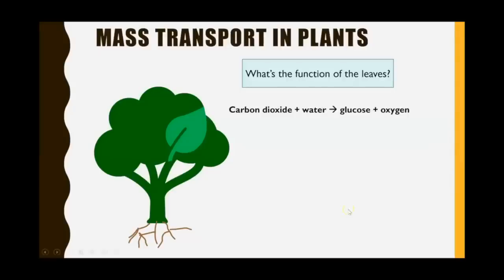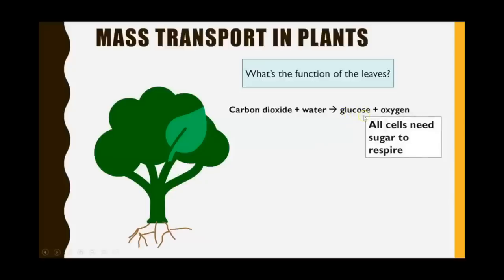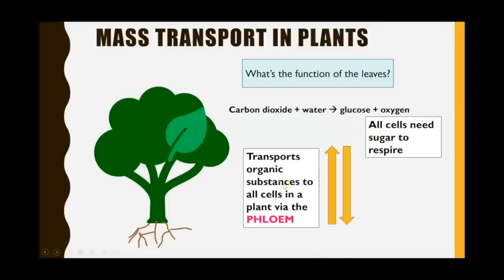The first thing is thinking about where these organic substances come from, and that takes us to the function of the leaves. One of the key functions is photosynthesis. Looking at the basic word equation: carbon dioxide plus water creates glucose and oxygen. Today it's the sugar component — the glucose — that we're interested in. Glucose and other sugars made are organic substances because they contain carbon, and all cells of a plant require glucose and organic substances for respiration.